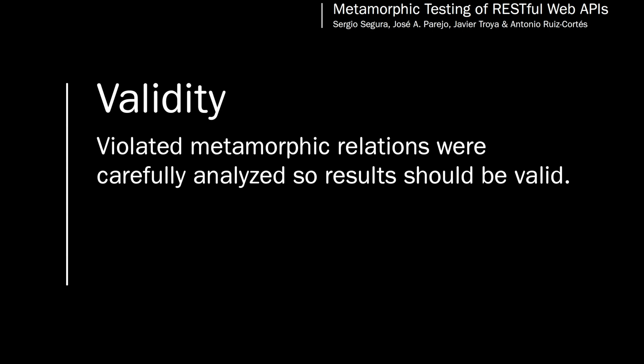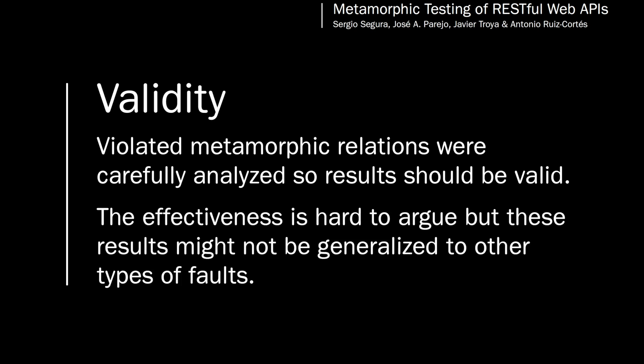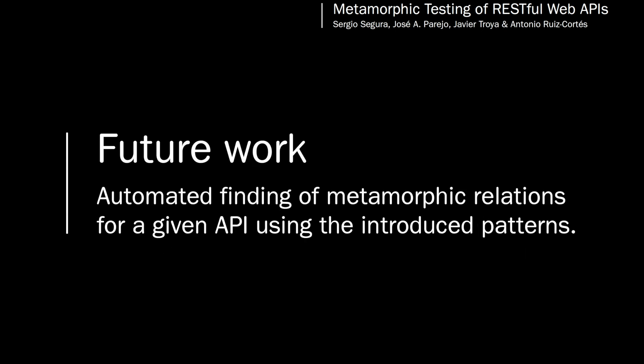The authors identified one main internal threat related to the correct identification of failures. To mitigate this, violated metamorphic relations were carefully analyzed. Although the effectiveness at detecting failures is assessed using a significant number of both artificial and real bugs, the results might not generalize to other types of faults. The authors hypothesized that the proposed patterns could also be used to automatically infer metamorphic relations for a given API.